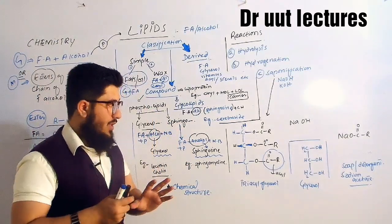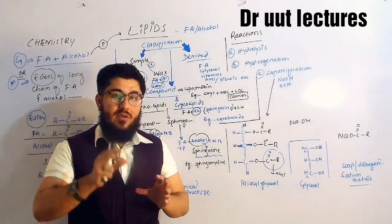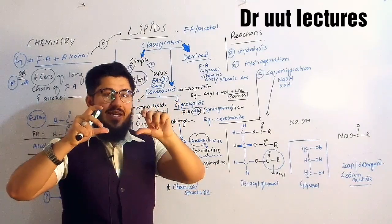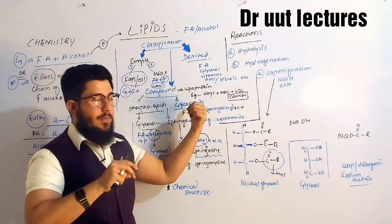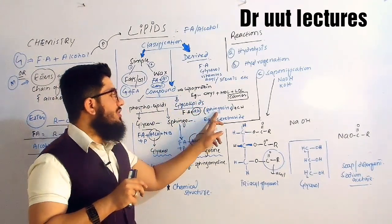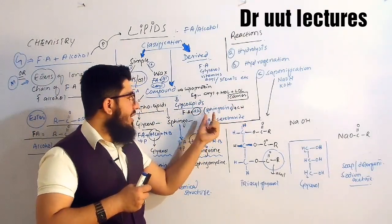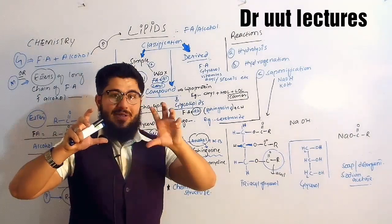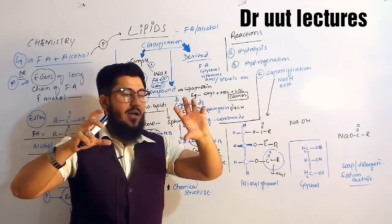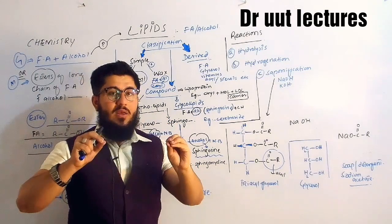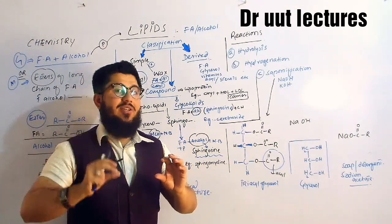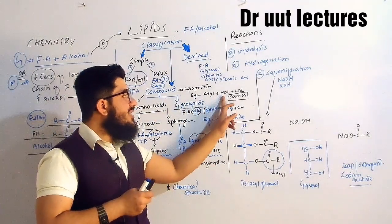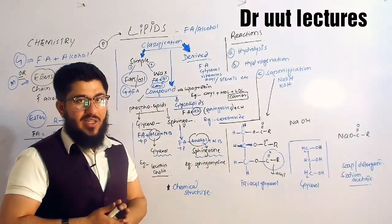Moving towards glycolipids: glycolipids have carbohydrates attached to the lipid. Lipid has fatty acid and alcohol, so carbohydrate plus fatty acid plus alcohol combine together to make a compound lipid called a glycolipid. Here the alcohol is sphingosine, and when carbohydrate, fatty acid, and sphingosine are combined, they make a glycolipid. The example is cerebroside. Moving towards lipoprotein: when a protein is attached with lipids, protein plus fatty acid plus alcohol together make a compound lipid called a lipoprotein. Examples are chylomicron, HDL, and LDL, which are carriers for lipids transporting them from the GIT to tissues and liver.